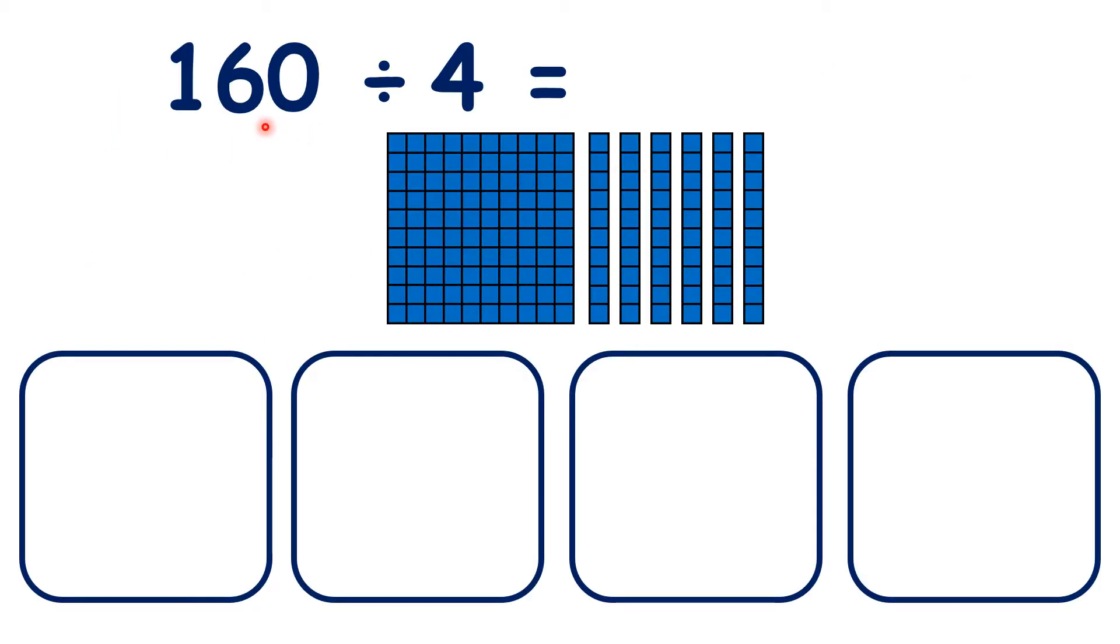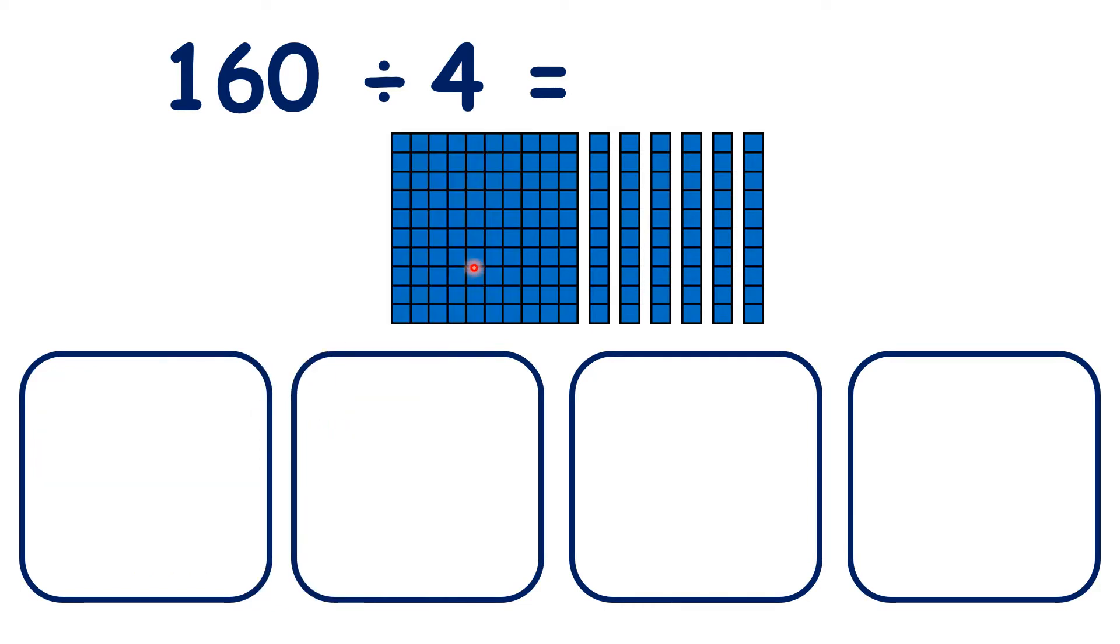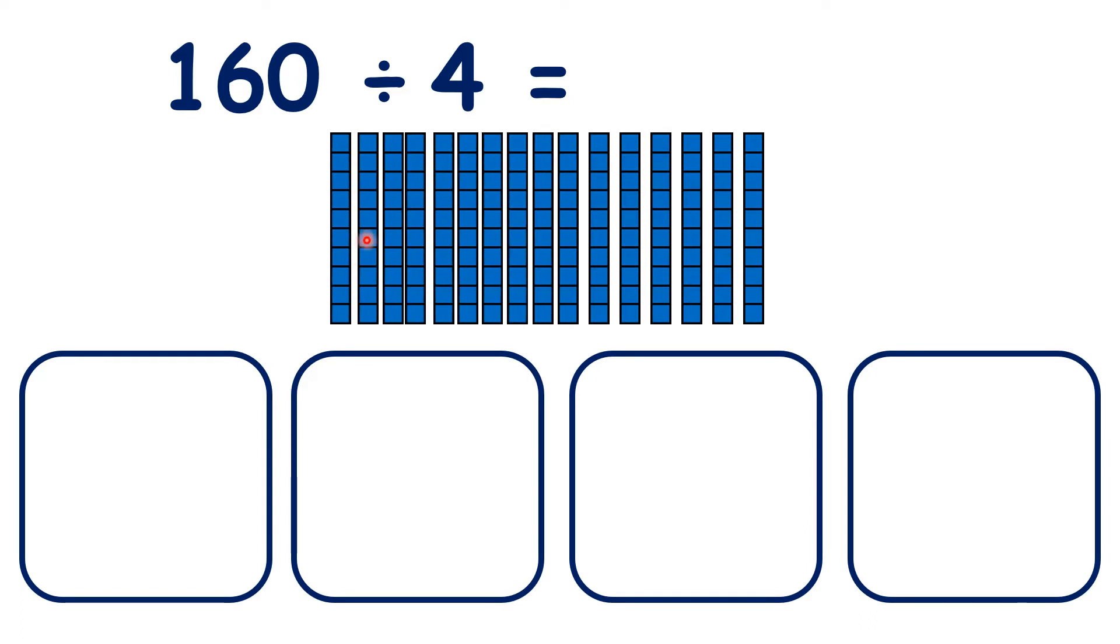We could also think of 160 divided by 4 as sharing 100 and 6 tens, so that's 160, between 4 groups. But we can't share out our 100 because when we divide by sharing, we need the same amount in each group. So instead, we need to break up our 100 into 10 tens. That now gives us 16 tens altogether.